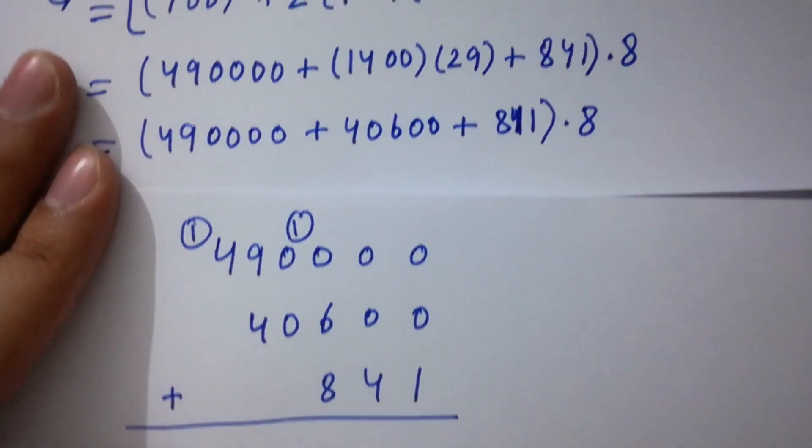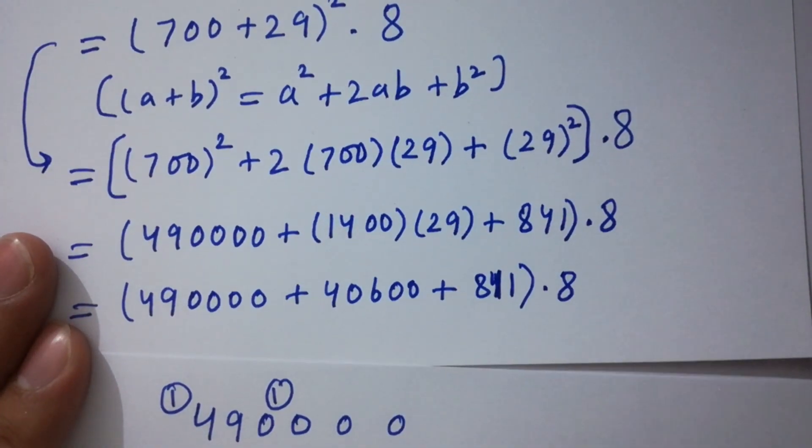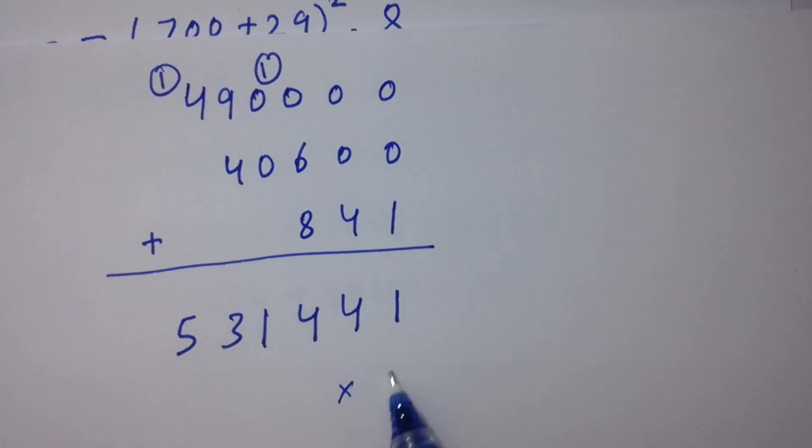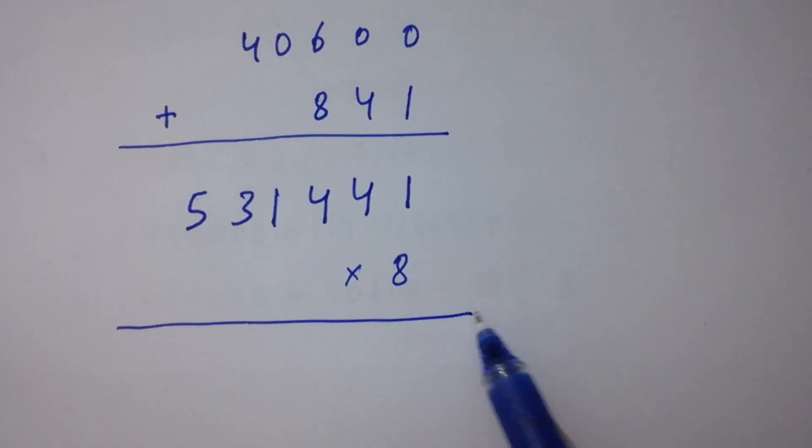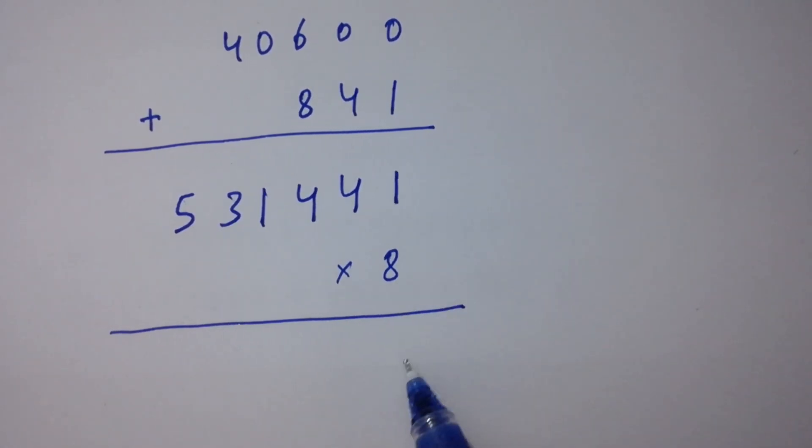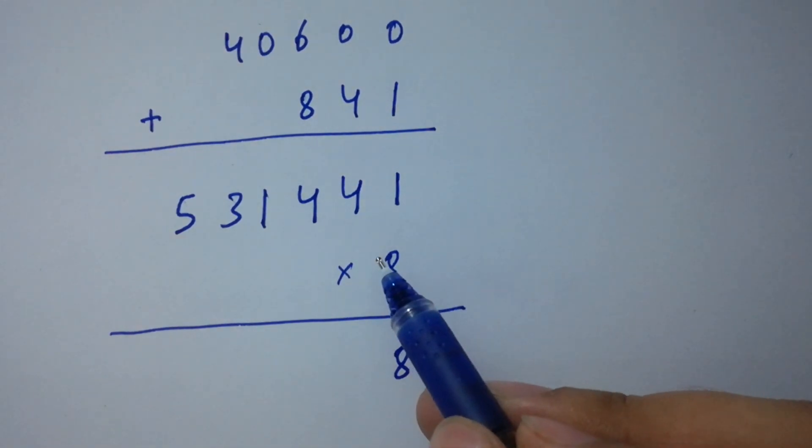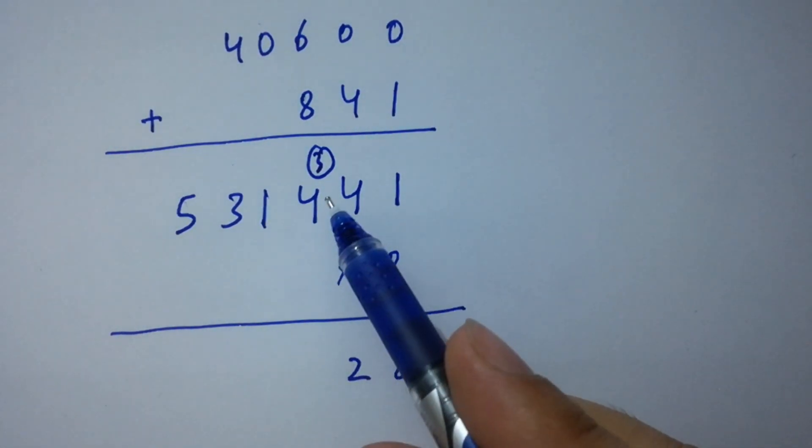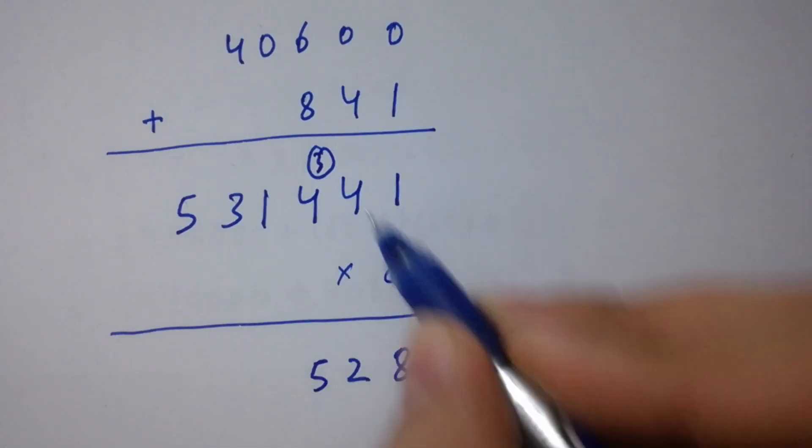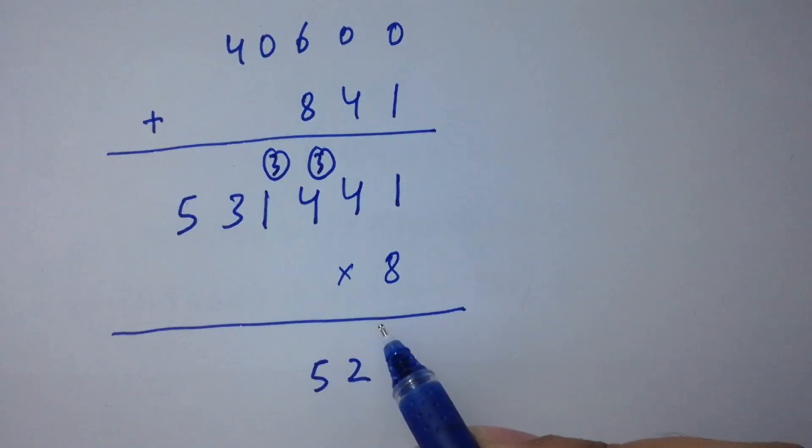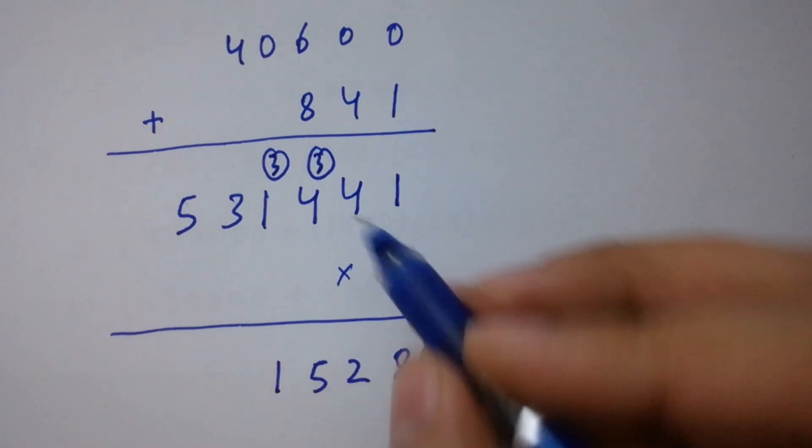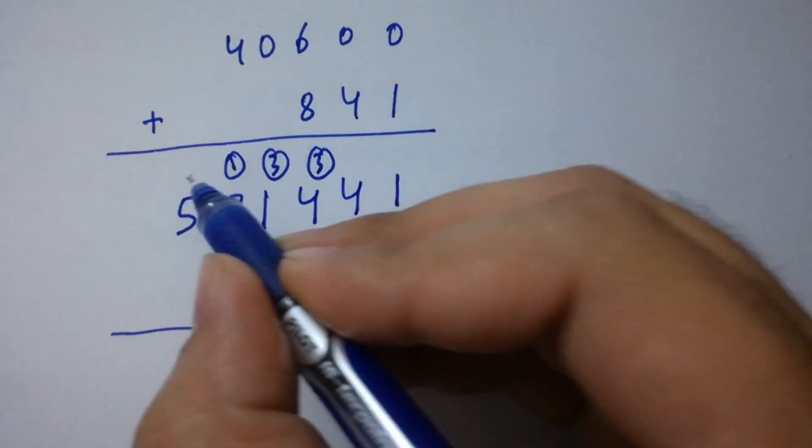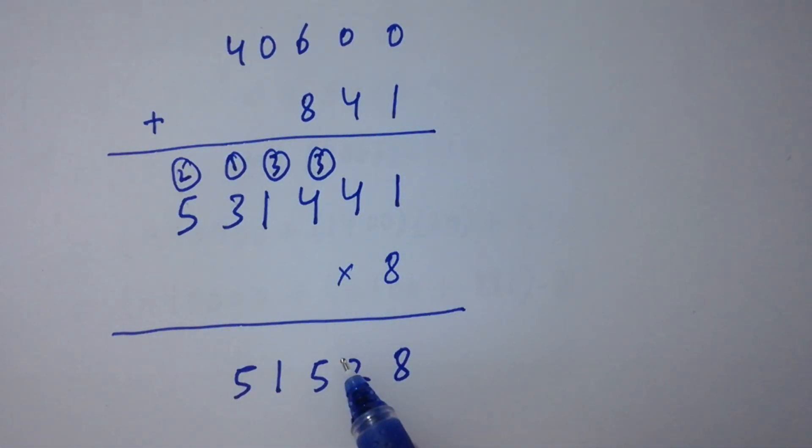In the next step we multiply by 8. 8 times 1 is 8, 8 times 4 is 32, so 2 here with 3 carry. 8 times 4 is 32 plus 3 is 35, so 5 here with 3 carry. 8 times 1 is 8 plus 3 is 11, so 1 here with 1 carry. 8 times 3 is 24 plus 1 is 25, so 5 here with 2 carry. 8 times 5 is 40 plus 2 is 42.